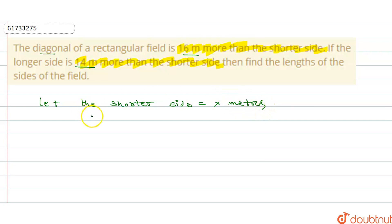So what is the longer side? Longer side is equal to x plus 14, right? Because it is 14 meters more than the shorter side. So x plus 14 meters more than the shorter side. And the diagonal is equal to x plus 16 meters, right?